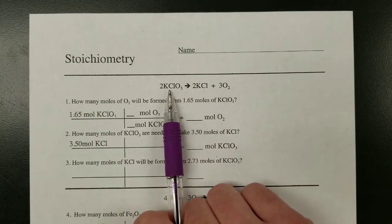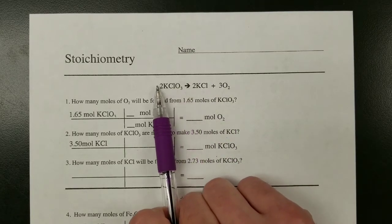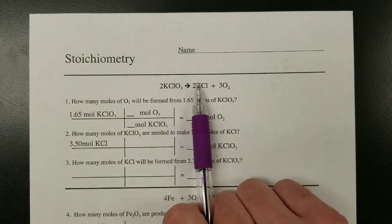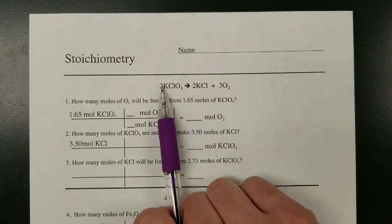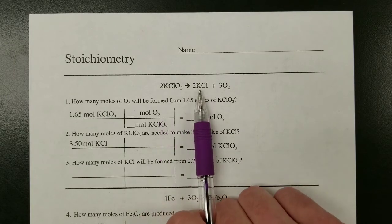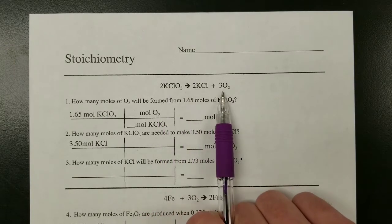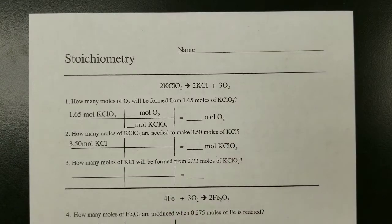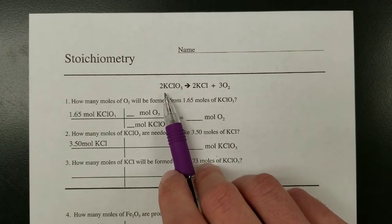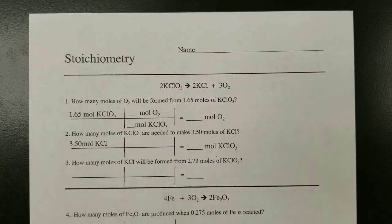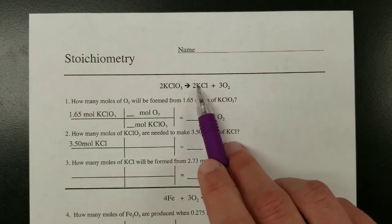But since that's really hard to count, you can say that since two of these makes two of these, twice as many of these will make twice as many of these. Two dozen of these will make two dozen of these, or two moles of these will make two moles of these and three moles of these. So we can use moles when looking at balanced equations as a way of looking at the relationship between the quantities of things consumed or produced.